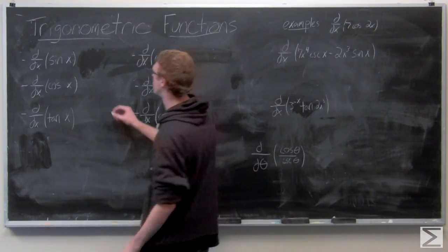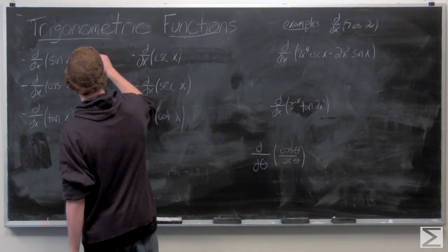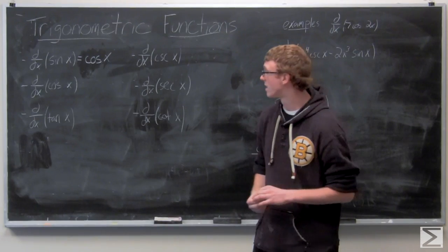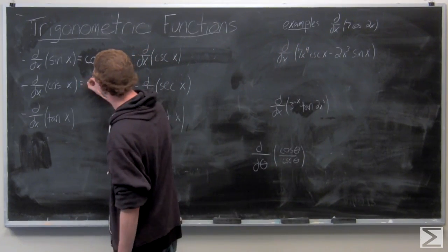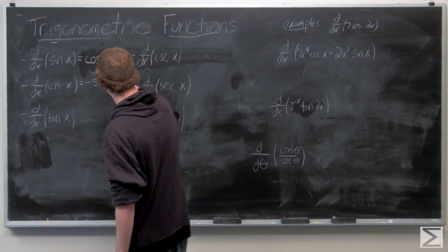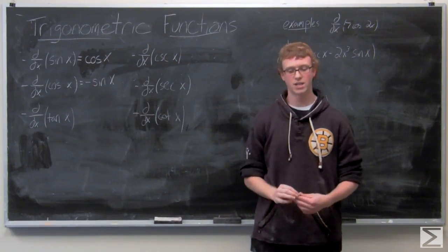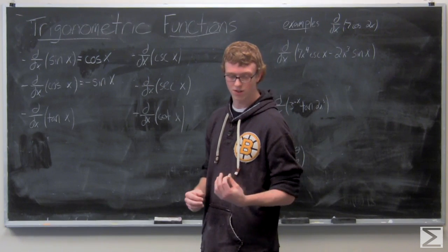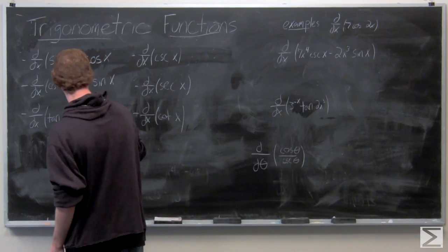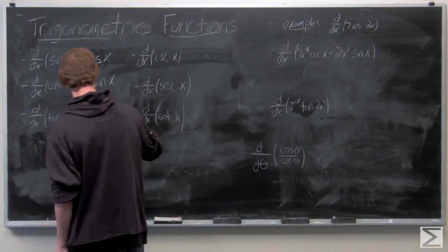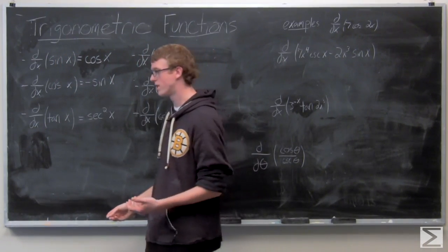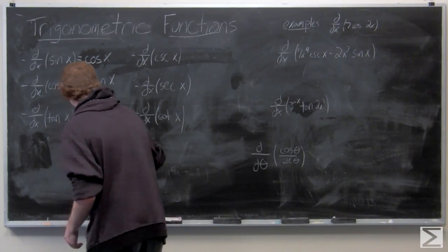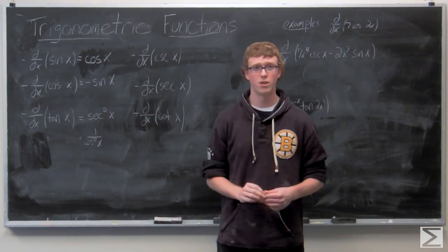The derivative of sine of X is just cosine of X — very simple and easy to work with. We're going to use that extensively. The derivative of cosine of X is negative sine of X. You can see that sine and cosine sort of work in tandem. The derivative of tangent of X is secant squared of X, which is also sometimes expressed as one over cosine squared. You can use either of those for tangent of X.